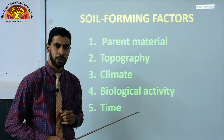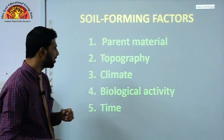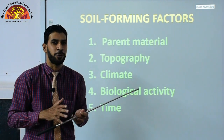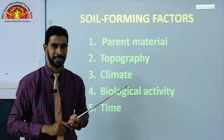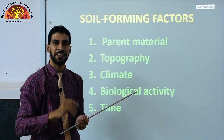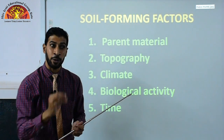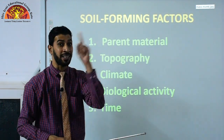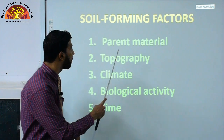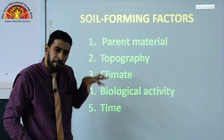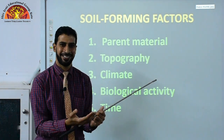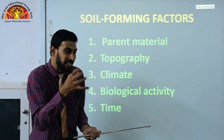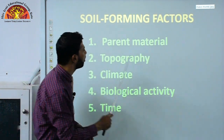The soil forming factors include parent material — the rock from which soil originates. For example, imagine a mountain with a rock on top, and heavy rainfall causes the rock to break into pieces that fall down. Those broken rock pieces will eventually become soil, and the original rock they came from is called the parent material — just like a parent and child relationship.